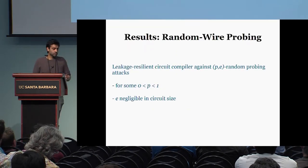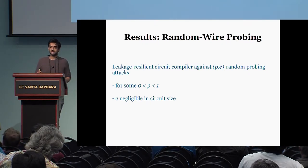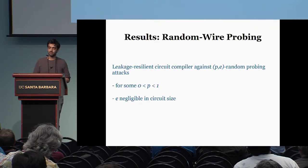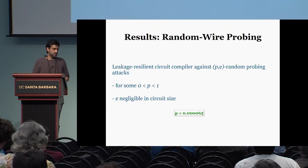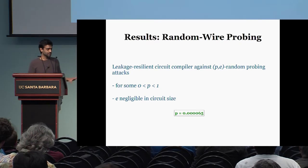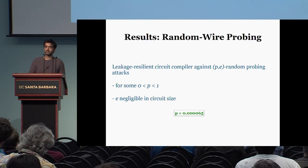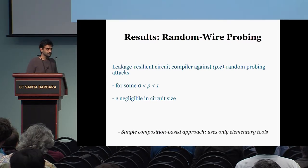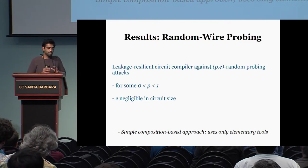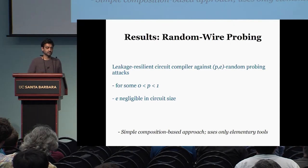In this work, we show a somewhat simple construction of leakage-resilient circuit compilers in the same regime as the prior two works. In fact, we can show a concrete constant. We hope our approach can be used to improve this constant. Underlying our result is a simple composition-based approach that only uses elementary tools, as you will see soon.